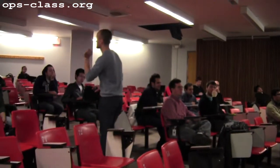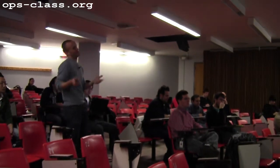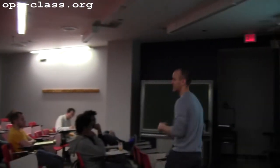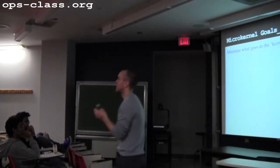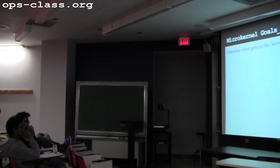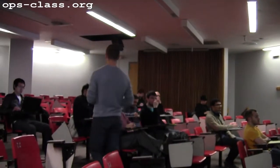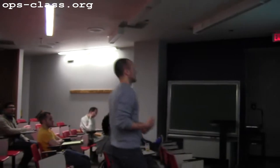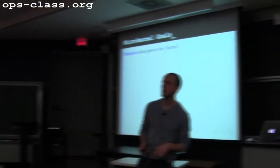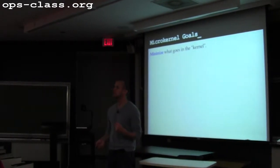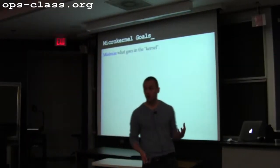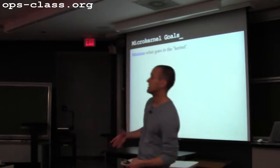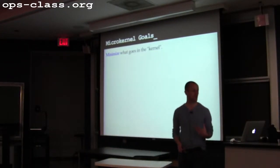Then we'll toss everything out and force it to run in user space. What's a consequence of this? You might have a more stable kernel. With a smaller kernel, it's easier to check for errors and easier to try to verify the correctness of it, either by human effort or in other ways. So what ends up in this kernel? What are some things you really can't get out of the kernel?